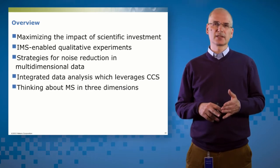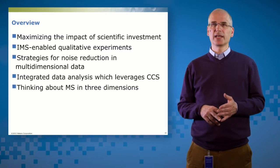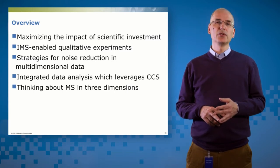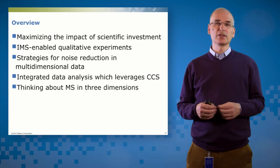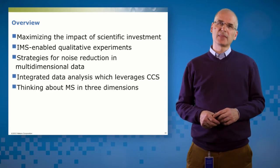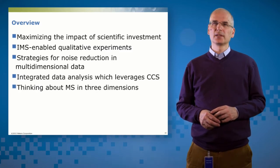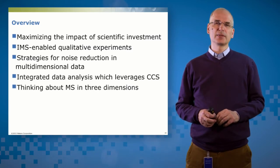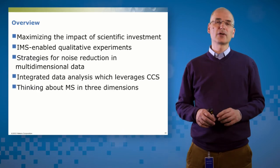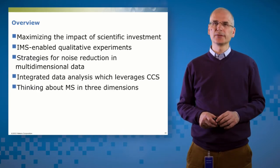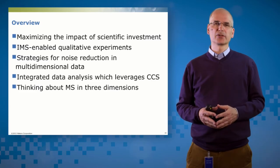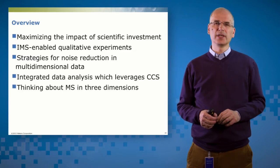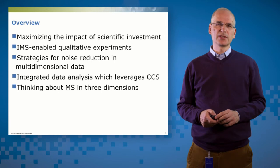We're going to do that through a variety of ways. The first thing we're going to do is talk about how ion mobility enabled experiments can add significant value to the experiments that we do. Second thing is I'm going to talk about some new features in software for addressing the challenge of the large data sets that we're creating and how we can reduce noise and make the data analysis as streamlined as possible. Next thing we're going to talk about is integrated data analysis and how we can use CCS to our advantage in a whole variety of ways to improve the outcomes of the studies that we do. And finally I'm going to talk about what NMR spectroscopists have talked about for a long while and that's using more than one dimension to look at the data that we create and how we can use multiple dimensions to understand that data.